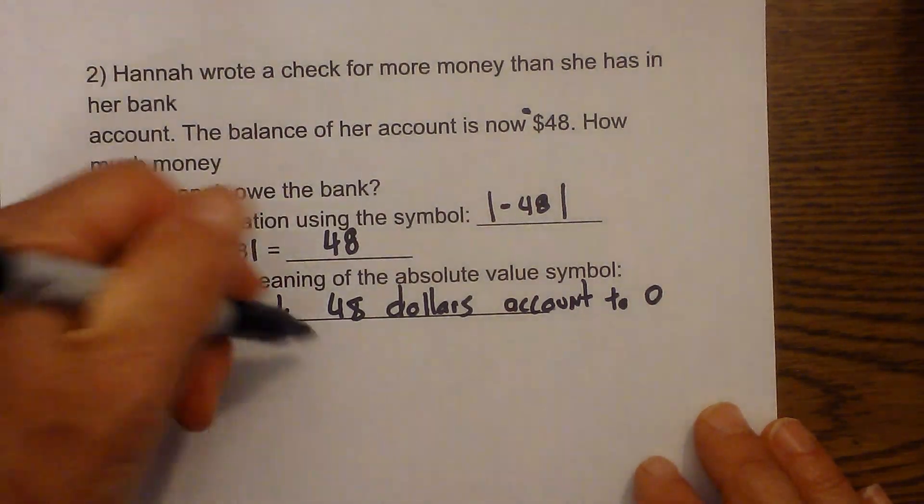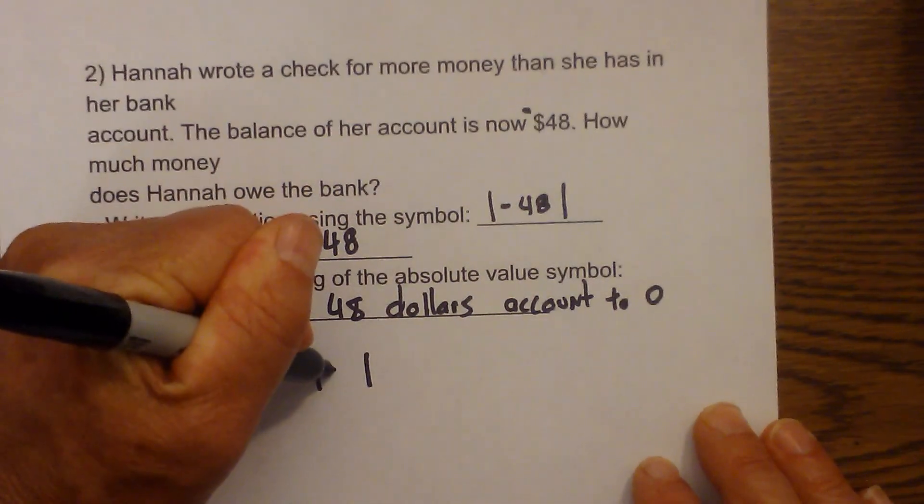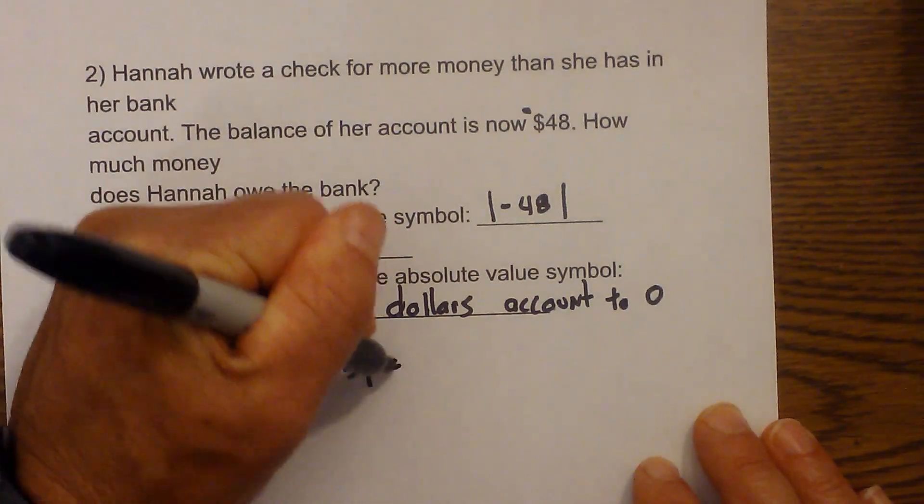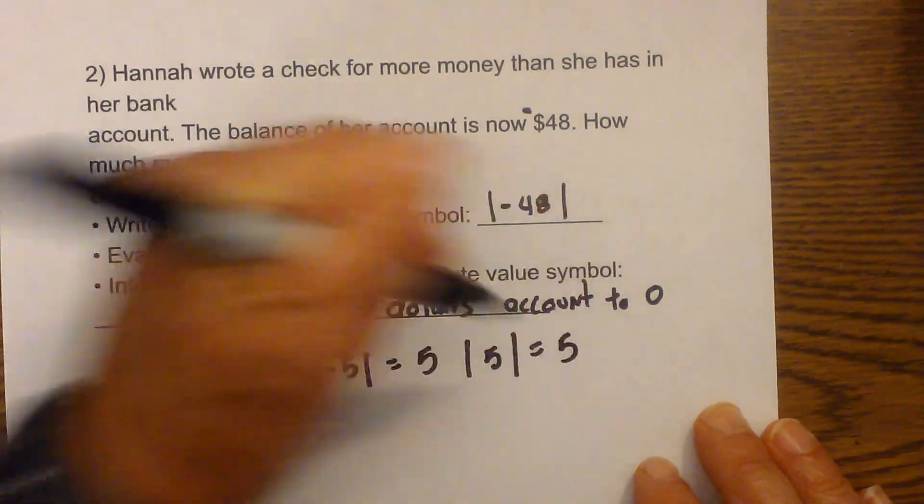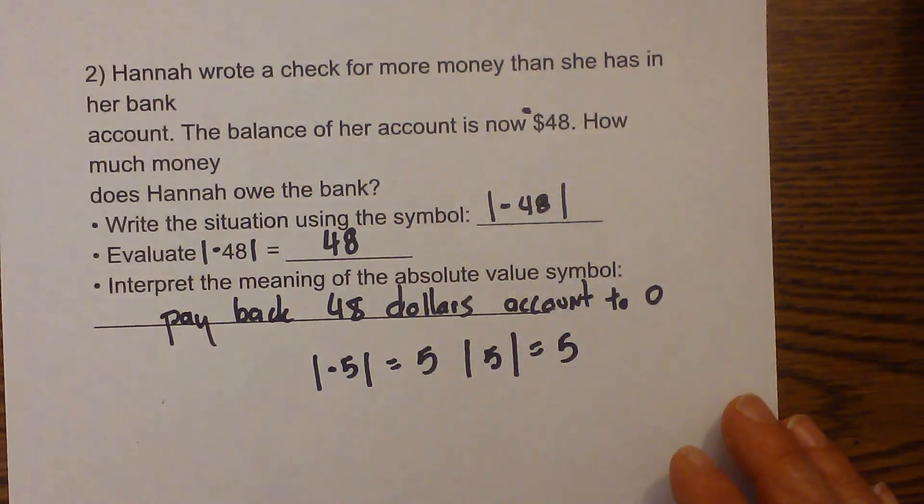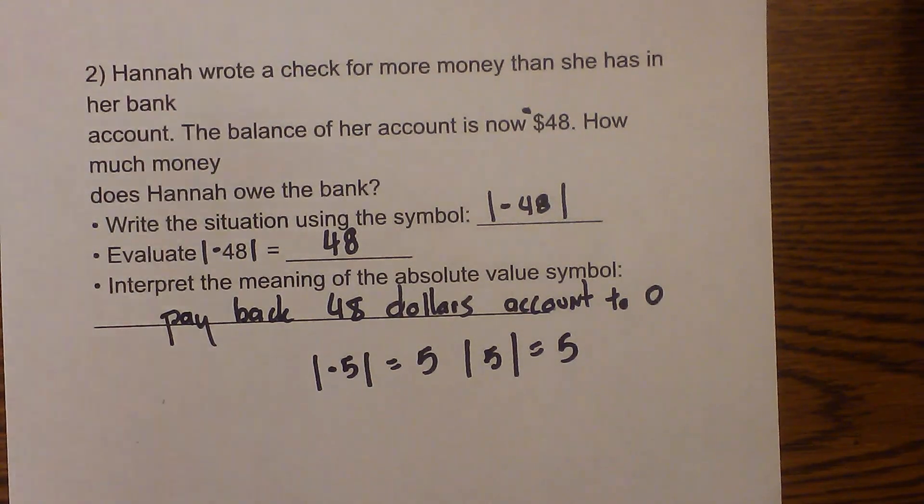So there we go. We have absolute value. Remember, it's written with two lines. Absolute value of negative 5 would equal 5. Absolute value of 5 is equal to 5 also. I hope that helped. Thanks for watching. Moo Moo Math uploads a new math and science video every day. Please subscribe and share.